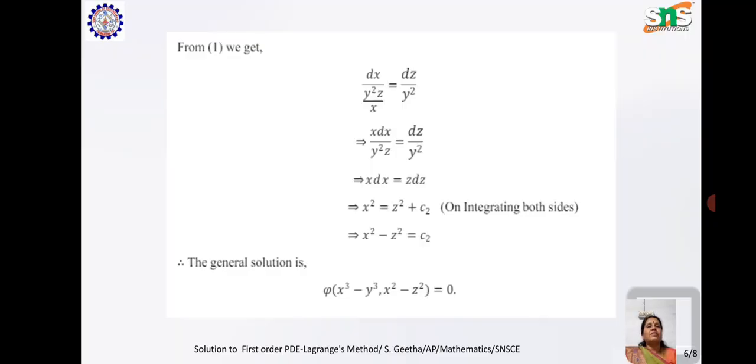Next, taking the first and last fractions, we get dx/(y²z/x) = dz/y², which implies x·dx/(y²z) = dz/y². By simplification, we get x·dx = z·dz.